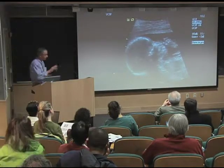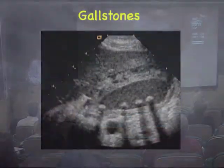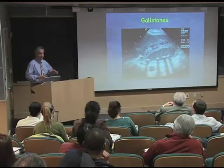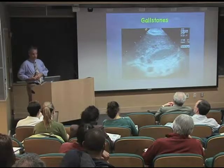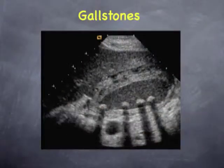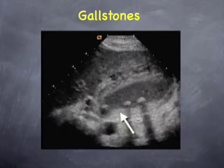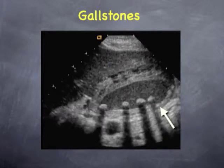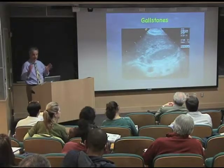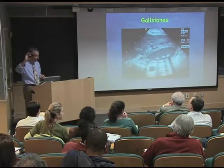Here's a patient that came into the emergency room because they had severe right upper quadrant pain after eating. Sure enough, when we do the ultrasound, we can see there are gallstones in the gallbladder and the gallbladder wall is markedly thickened. One of the beauties of ultrasound is that the probe is about the size of this little pointer.